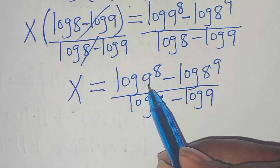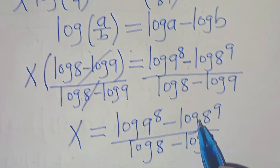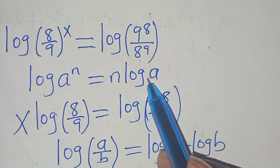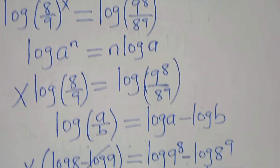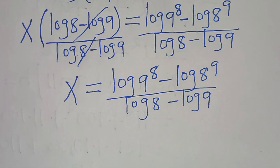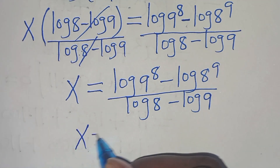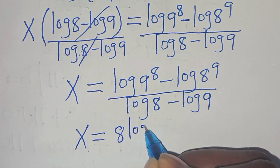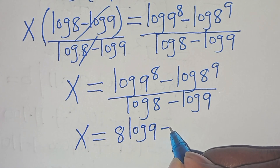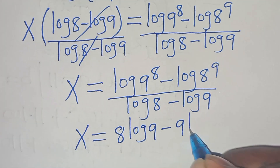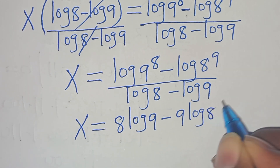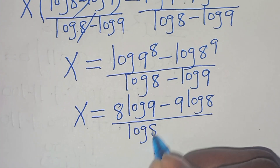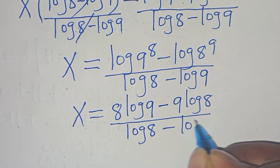Now log(9 to the power of 8) is in the form of log(a to the power of n), which can be expressed as n times log a. Applying this power property, x equals 8 log 9 minus 9 log 8, divided by (log 8 minus log 9).